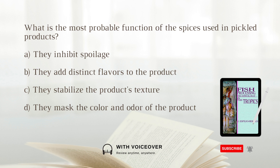What is the most probable function of the spices used in pickled products? A. They inhibit spoilage. B. They add distinct flavors to the product. C. They stabilize the product's texture. D. They mask the color and odor of the product. Answer: D. They mask the color and odor of the product.